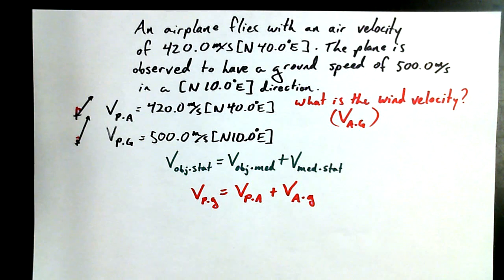So instead of velocity of object relative to the stationary reference frame, that would be the velocity of the plane relative to the ground. The plane is the object, the stationary reference frame is the ground. So we're just plugging it into a very familiar setup, which is equal to the velocity of the plane relative to the air, that's the object relative to the medium, plus the velocity of the air relative to the ground, or the medium relative to the stationary reference frame. And that can be done every time.